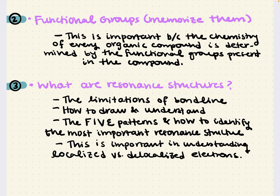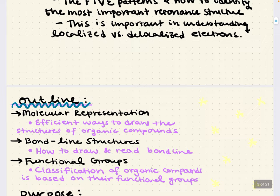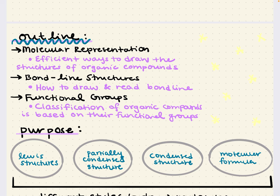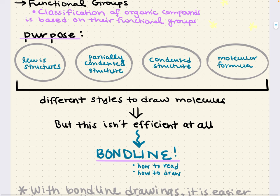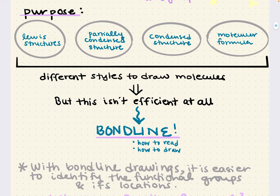Those are the three main topics of this chapter, but in this session we're going to start off with molecular representation, bondline structures, and functional groups. The purpose of this session is to express the efficiency of bondline structures over other styles. With bondline, it's going to be easier to identify present functional groups and their locations. Remember, functional groups play a significant role in directing and controlling organic reactions.